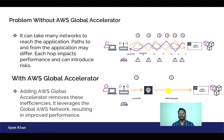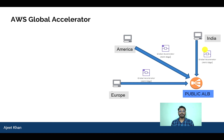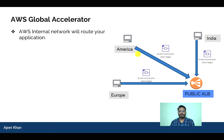Let us now understand the concept of AWS Global Accelerator. We have a public ALB in AWS serving our web application, with users across the globe from Europe, America, and India. When someone accesses our web application from America, it passes through a public network with multiple hops in between. What Global Accelerator does is route the request through an internal AWS network, which is fast and direct with far fewer hops.